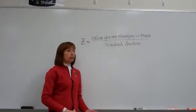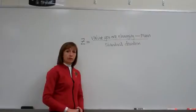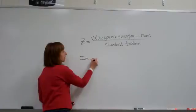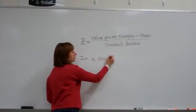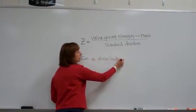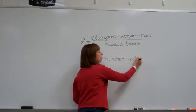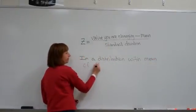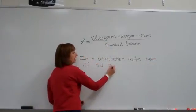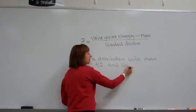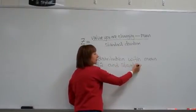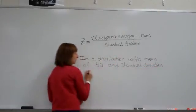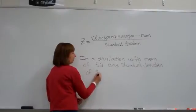Again, the z-score tells you the number of standard deviations the value is away from the mean. For example, let's say we have a distribution with a mean of 52 and a standard deviation of 3.